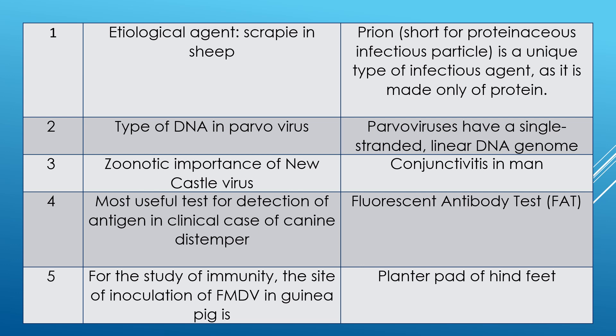Question 24: most useful test for detection of antigen in a clinical case of canine distemper. When you get a clinical case of any viral disease, you can detect antigen only — antibody will take time. If the case is pretty old, then there will be antibody. But first, as a clinician, you have to detect antigen. Frequently asked question. Answer is fluorescent antibody test, in short called FAT. Antigen and antibody combine together and give a fluorescent signal.